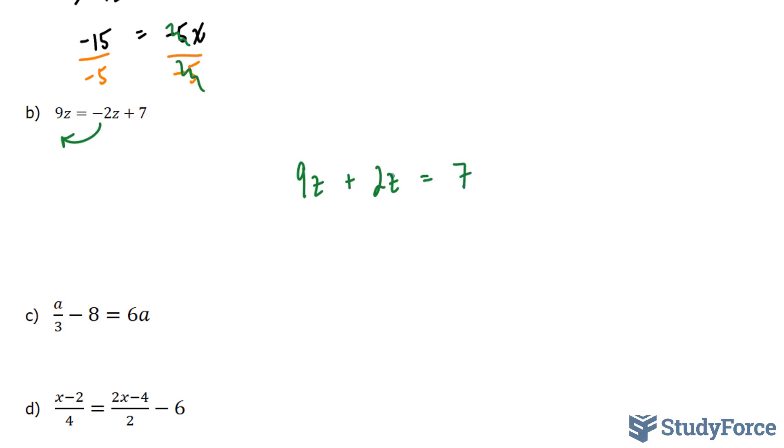Now of course, you could have placed this 2z in front of the 9z. The order doesn't count. So had you done 2z + 9z = 7, you'd still end up with the same answer. So let's combine these two terms together. We end up with 11z = 7. And to isolate for this z, we divide both sides by 11, where we end up with z = 7/11. Let's move on to question C.